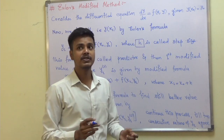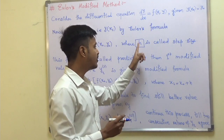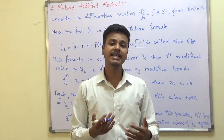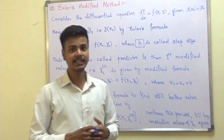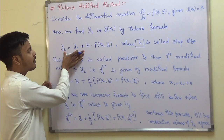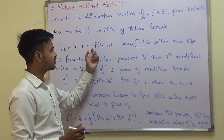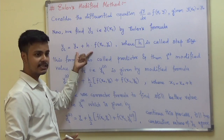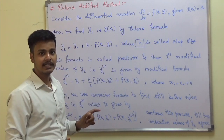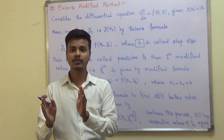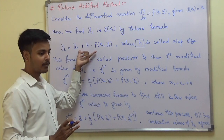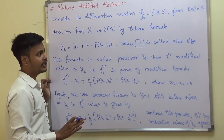The step size h is important because, depending on its value, we decide how many steps or iterations are required to get the solution. Once you get the value of y1 by Euler's formula, this is also called the predictor. It is called the predictor because it predicts the solution of the given differential equation — it gives you an idea that the solution may be near to the value given by this formula, but that is not the final solution.